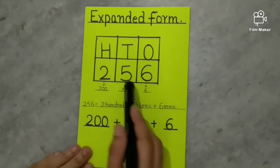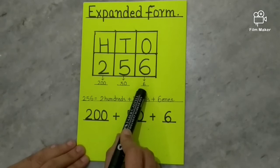See, here we have a number 256. Place value of 6 is 6.